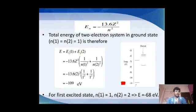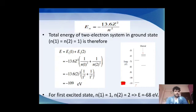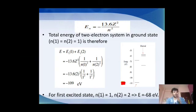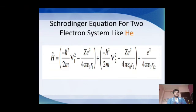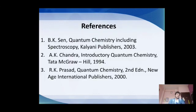This is the important application: how to calculate the energy of a two-electron system when the two electrons are non-interacting. The energy is E = −13.6 × Z² / n² electron volts. Putting E = E₁ + E₂, we get E = −13.6 Z² × (1/n₁² + 1/n₂²). Substituting values for n₁ and n₂, we finally obtain a value of −109 electron volts. This is the key result — the energy of the two-electron system — and the Hamiltonian operator is the sum of two individual Hamiltonian operators.